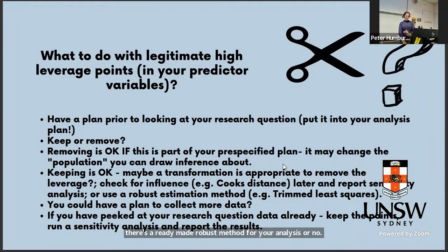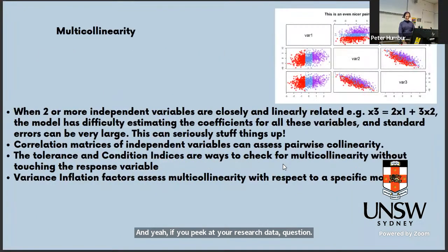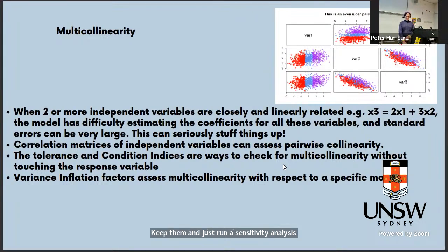With high leverage points, I'm more comfortable with removal than with response outliers, because you may be removing an area of the covariate space where you don't have enough data to draw robust conclusions. You could also plan to collect more data to fill in that space. Alternatively, try transformations, plan a sensitivity analysis checking influence, or use robust estimation methods if a ready-made robust method exists for your analysis.